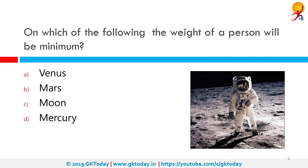On which of the following will the weight of a person be minimum? The correct answer is on the moon. 100 kgs is equivalent to 16.5 kgs on the moon, and for example 37.8 kgs on Mercury. So our weight on earth is more than that on the moon. On the moon, our weight is exactly 16.5% of our weight on earth.